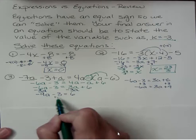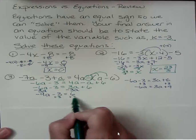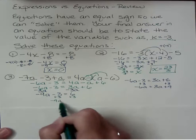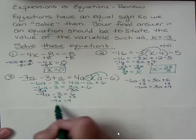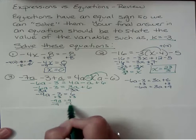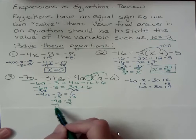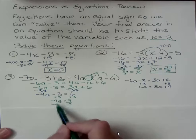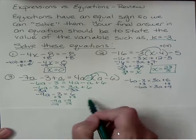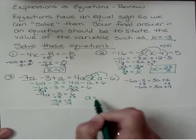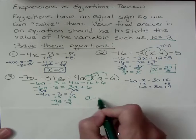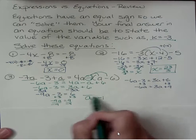And then I'm going to divide by the coefficient. The coefficient is negative 9. Negative 9 divided by negative 9 is a positive 1. So I just get a. And then 9 divided by negative 9 is negative 1. And that's what I think is the answer.